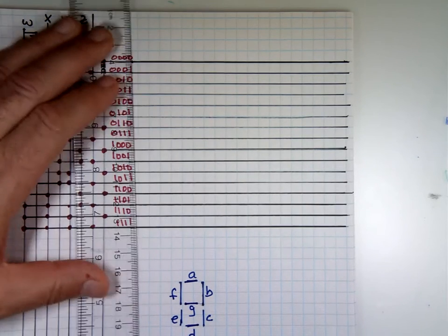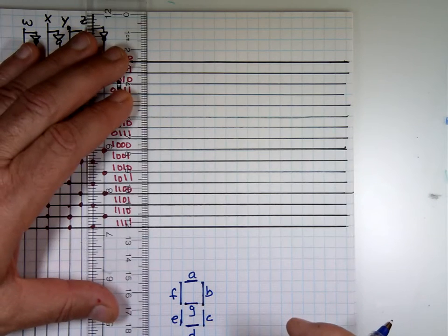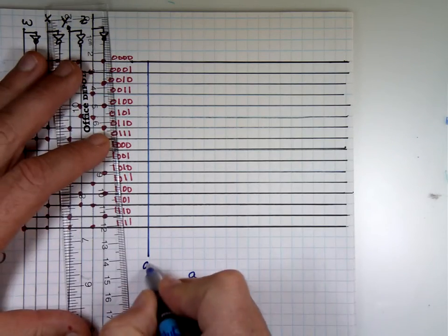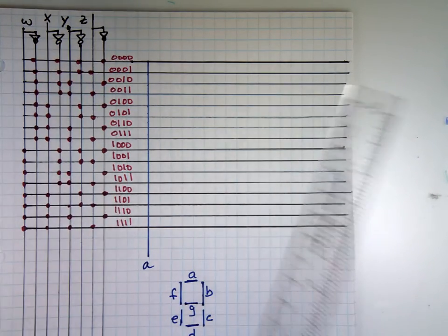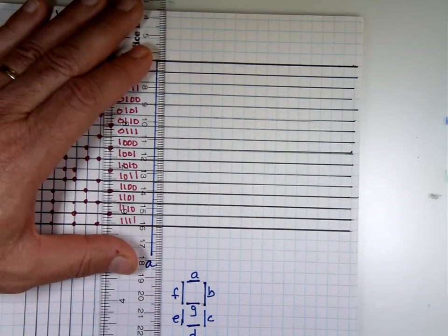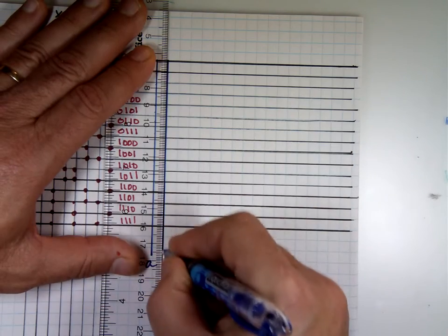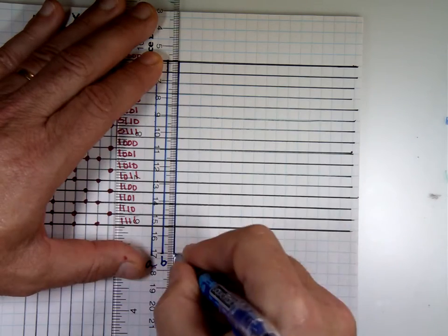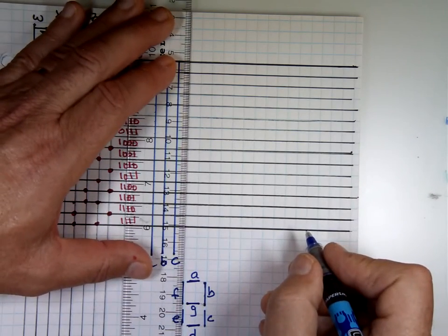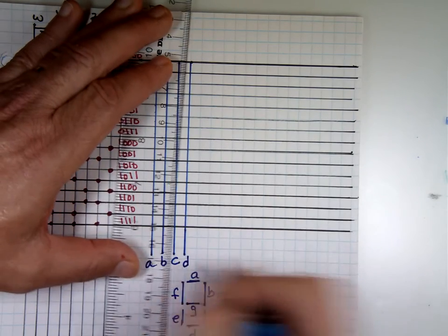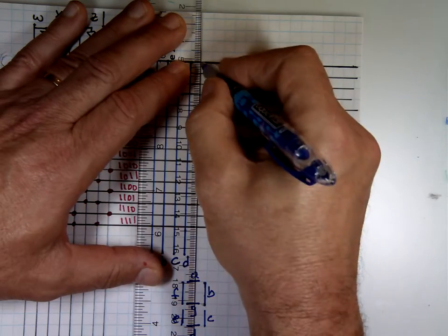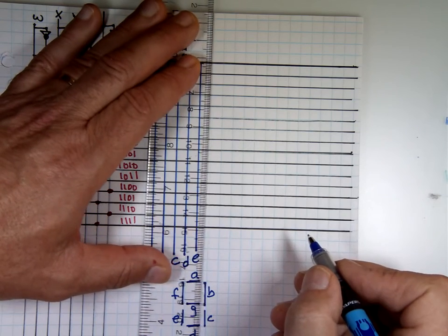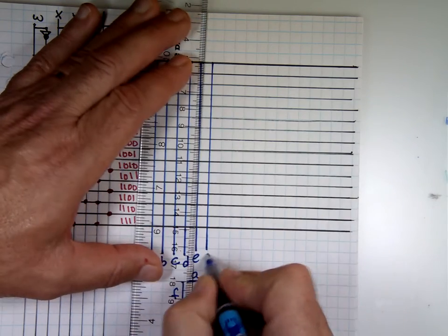So I'm going to have seven outputs here — one for A, one for B, C, D, E, F, and G. Instead of putting gates, it gets hectic. Drawing the gates becomes really messy.